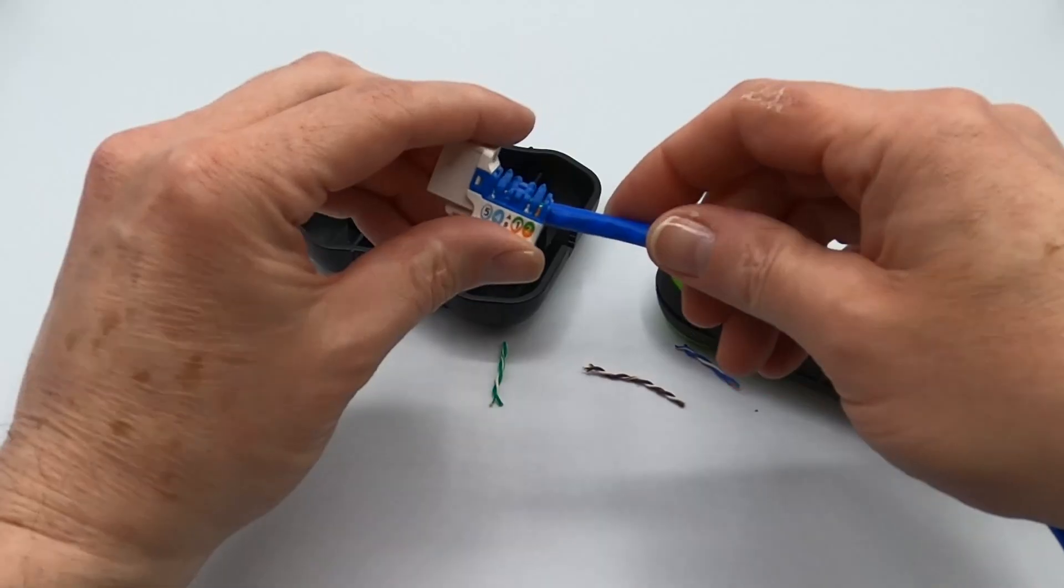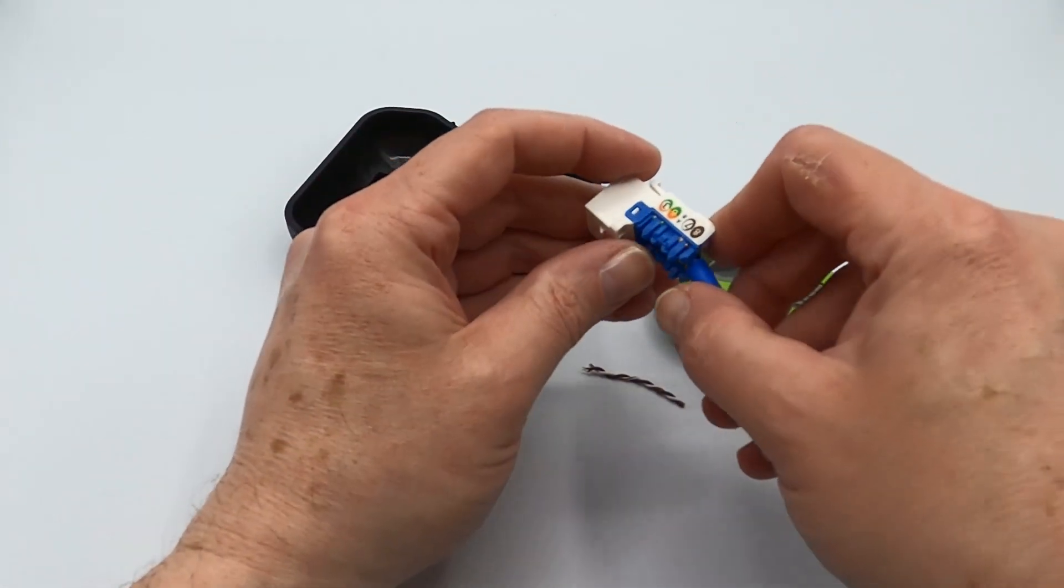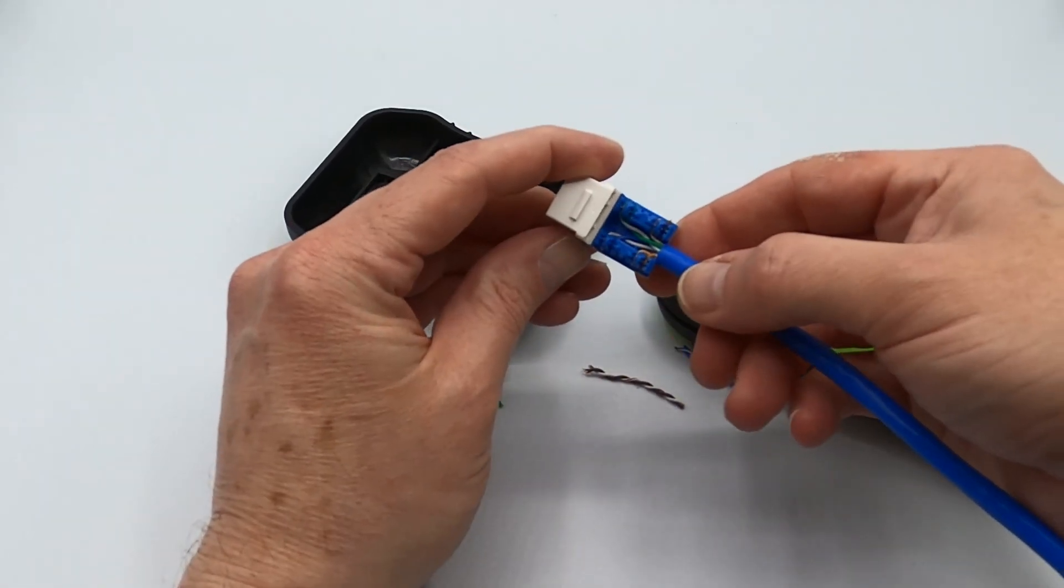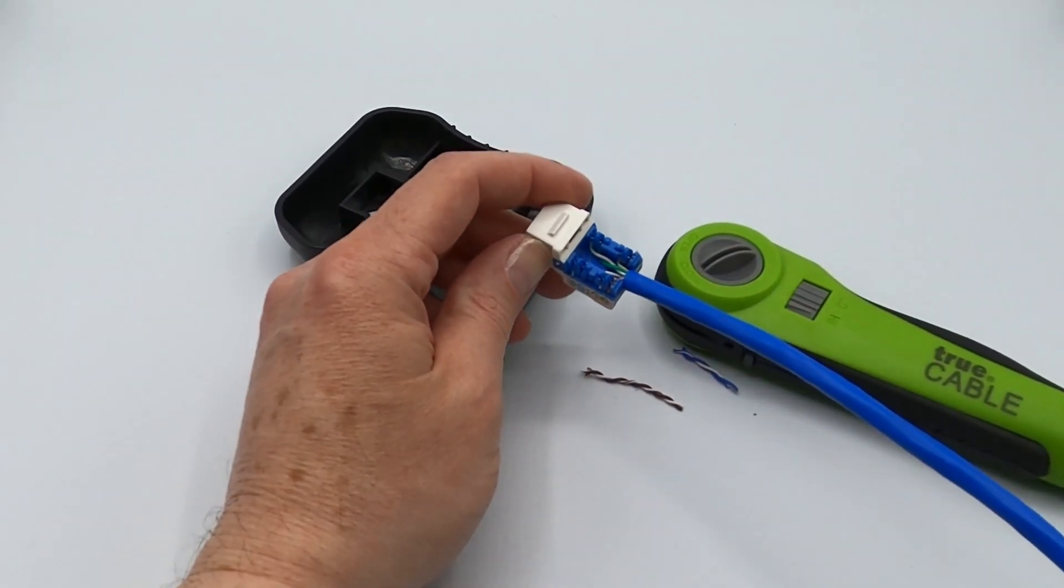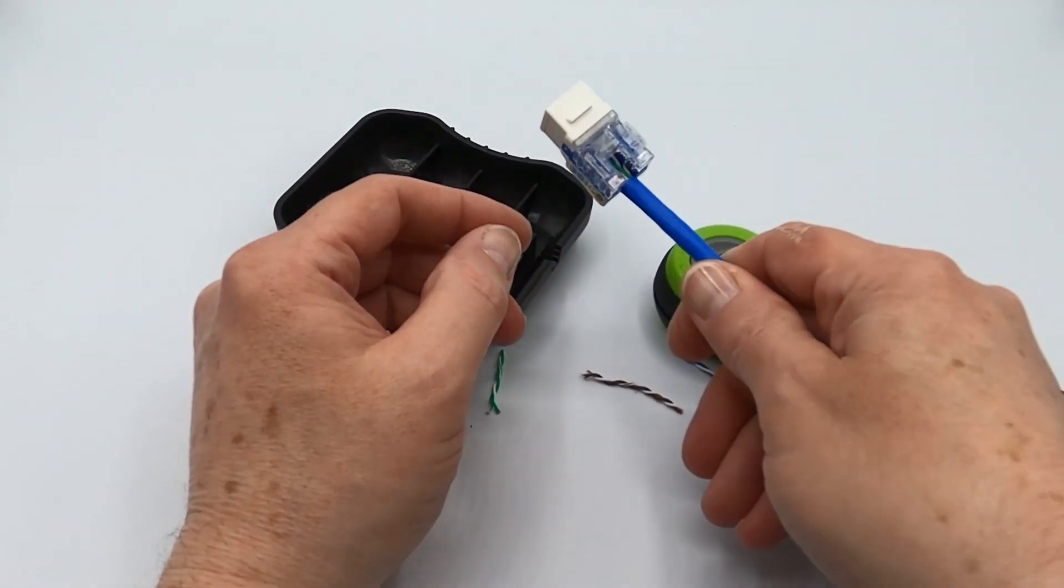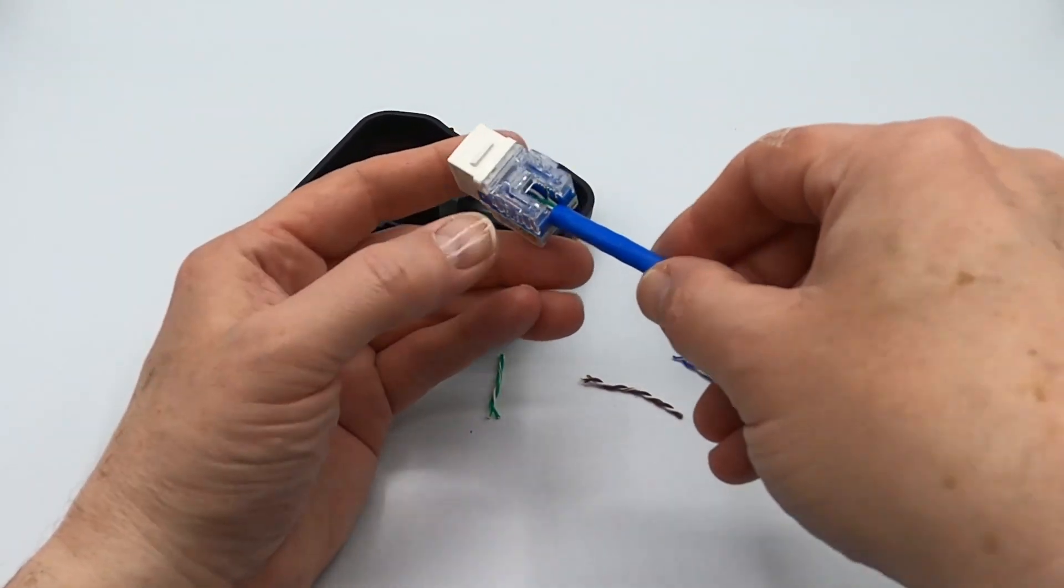And then once you get it all punched in, just check your work, make sure all the conductors are fully seated and flush cut off. And the conductors are all fully seated and they have been flush cut off. Basically, simply top it off with our little cap here and you're ready to go. And you can go ahead and plug this into a face plate and away you go off to networking.